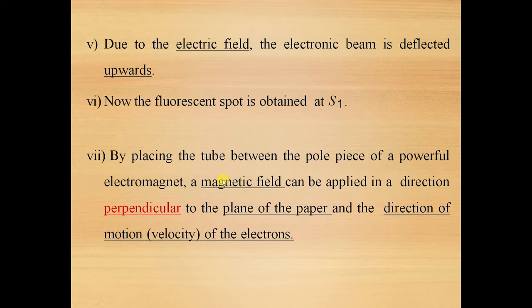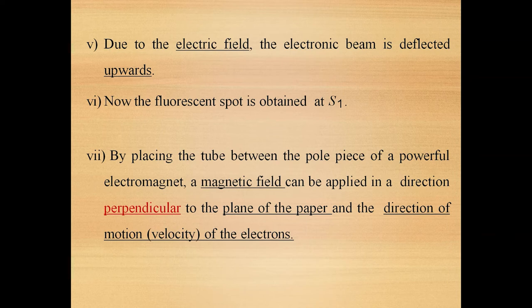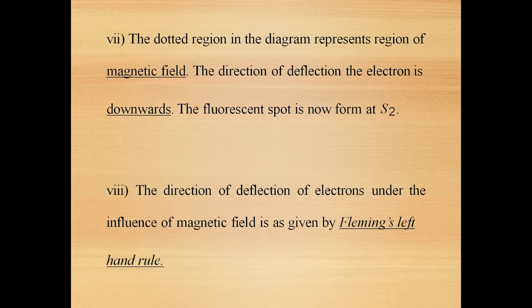Now the electron beam is subjected to a magnetic field by applying it in a plane perpendicular to the plane of the paper. The north pole is in front of the paper and the south pole on the other side, so the magnetic field is directed into the paper — away from us. In this situation, the velocity is along the x direction, the electric field is in the negative y direction, and the magnetic field is in the z direction — so velocity, electric field, and magnetic field are mutually perpendicular. The dotted region in the diagram represents the region of the magnetic field. The direction of the electrons is downwards, and the fluorescent spot is now formed at S2.